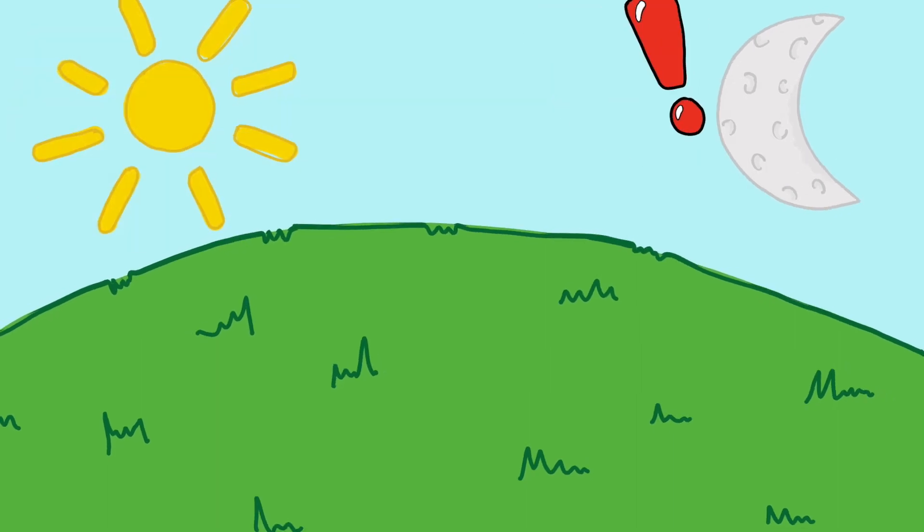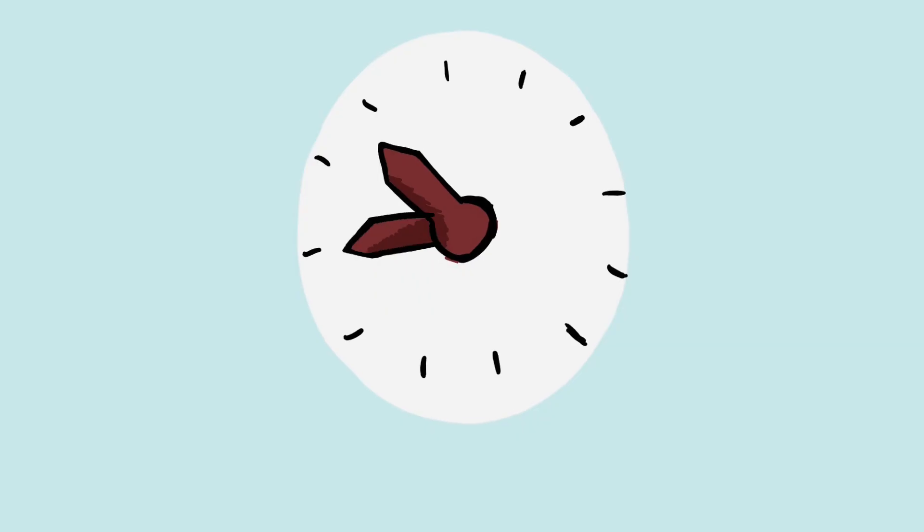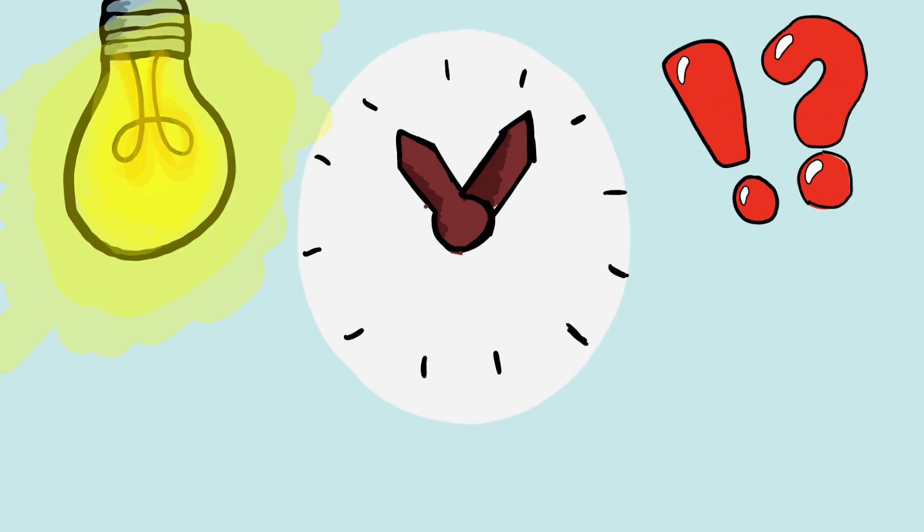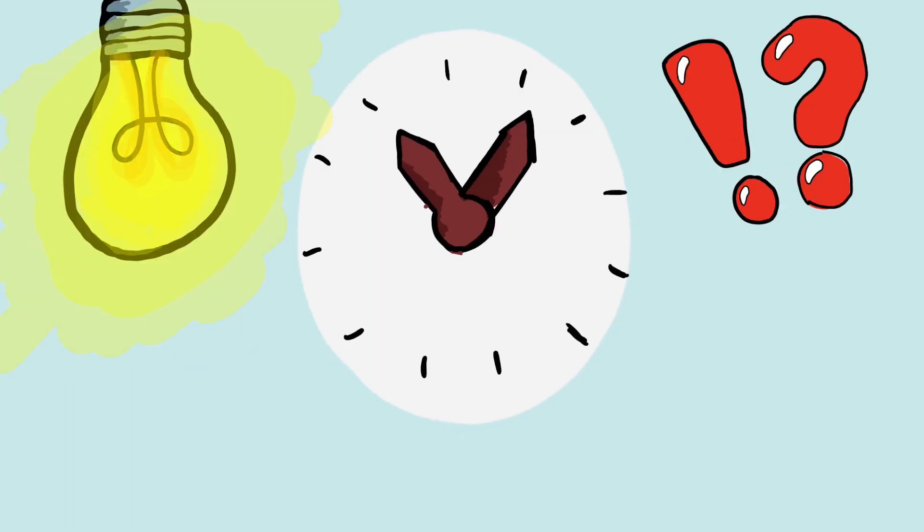But are these signals always helpful and what happens when the body is exposed to high levels of light at unnatural times? This can cause disruption to your body's daily cycle and make you feel jet lagged.